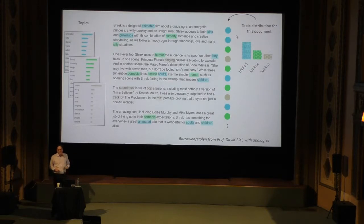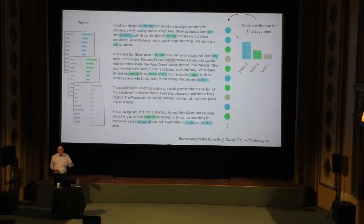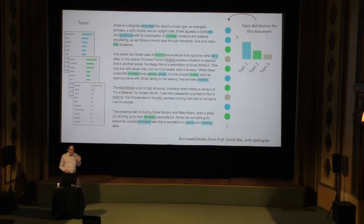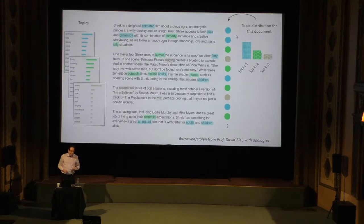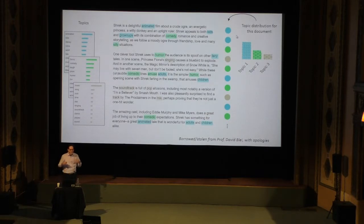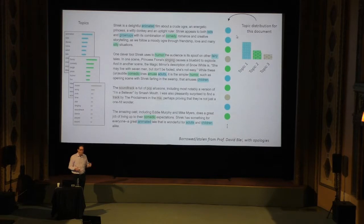A key concept here is that word order does not matter, because we're just randomly selecting from this distribution. We're selecting a color — which is a topic — and the topics are just spraying words onto the page. There's no notion of language, no notion of semantics. This imaginary way of generating our document makes LDA a generative model, where we make these assumptions about how the documents actually came to be.